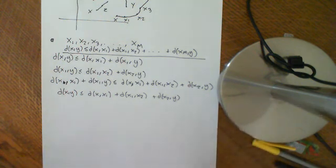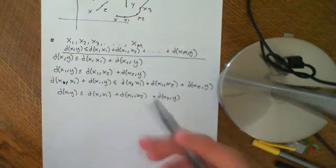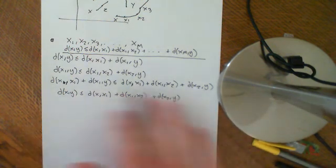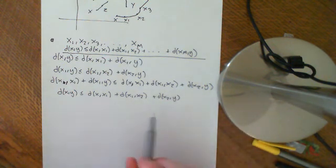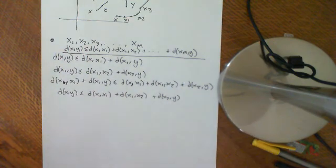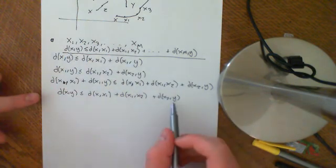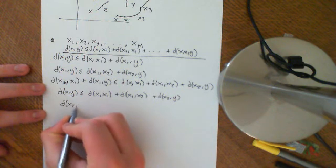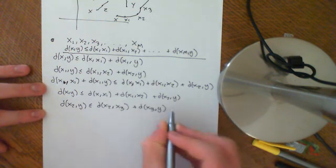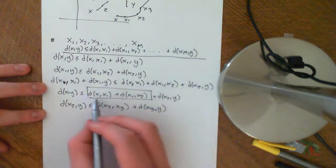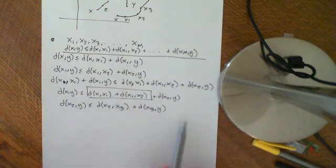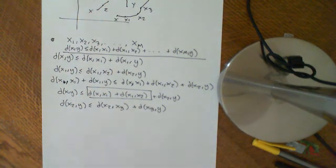By induction you can derive the next step. You'd say it's true for n equals 1, assume it's true for n equals k, and prove it's true for n equals k+1 — and it's pretty straightforward to prove. Alternatively, if you don't like proof by induction, you could just continue this process until you've got all n points. Next you'd say the distance between x2 and y is less than or equal to the distance between x2 and x3 plus the distance between x3 and y, add the accumulated terms to both sides, apply the transitive property, and continue like that until you have all n points.